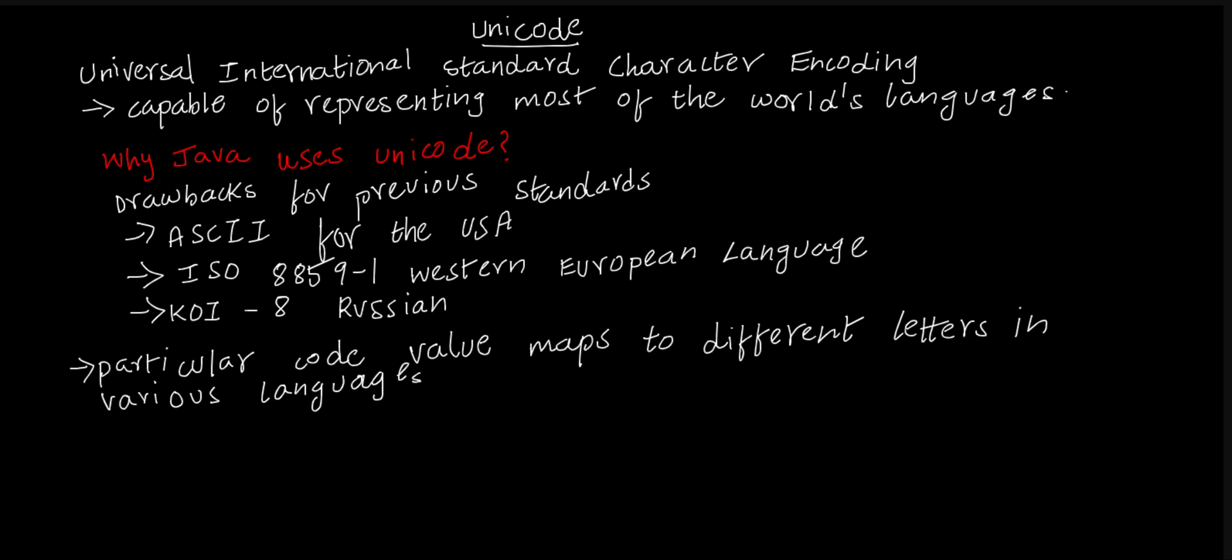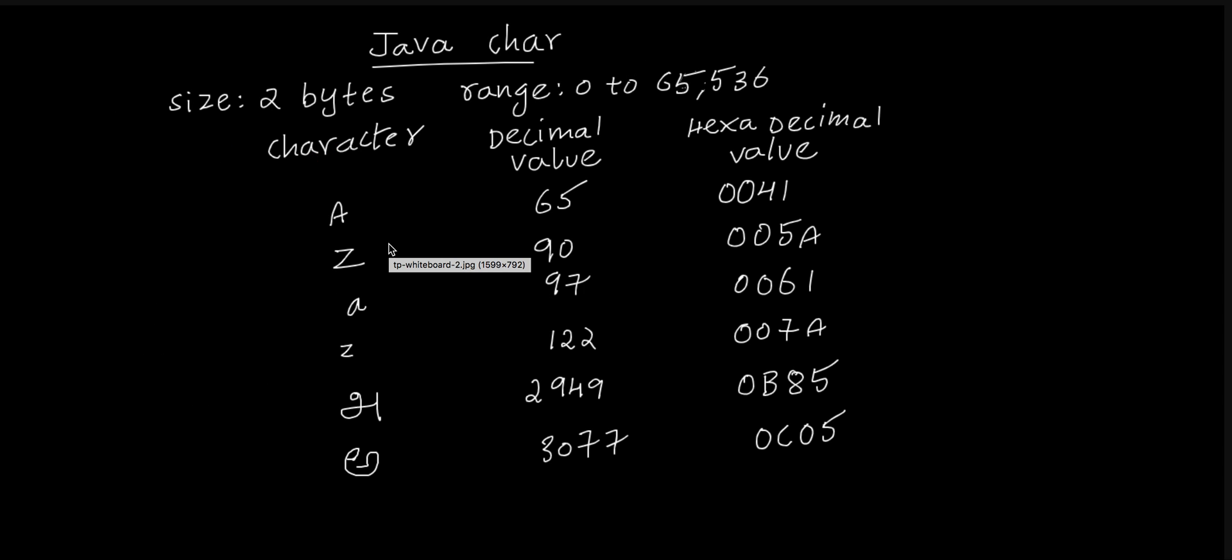I'll show some Unicode values for popular characters. In Java, we use Unicode for storing characters. A Java character requires two bytes of memory, and the range for the character is 0 to 65,536. It can store a maximum of 65,537 characters.